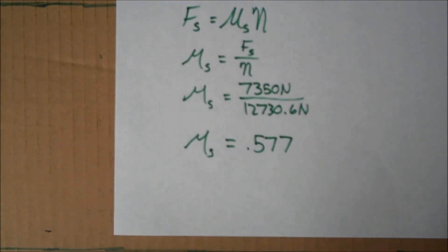The coefficient of friction between Thomas' car's wheels and the ground is 0.577. We have finished this problem. Hope this is helpful. Thank you.